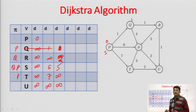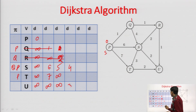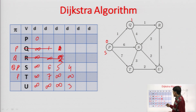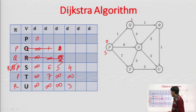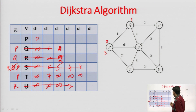Then we delete U (cost 3) — from U there are no outgoing edges, so no updates happen. Then we delete S (cost 4). From S, we look at the connection to T — the edge cost is 3, so 4 plus 3 = 7. We update T to 7 and set T's predecessor to S. This way, we can find out the shortest path between every pair of vertices from the source.